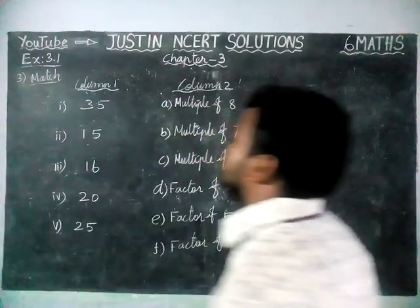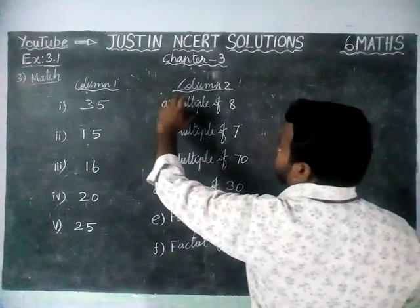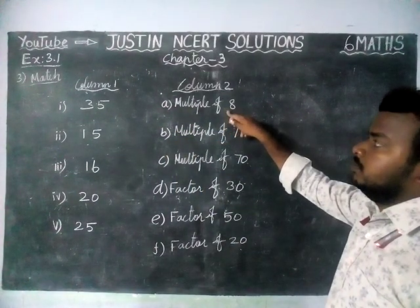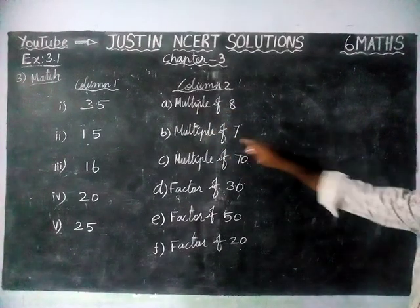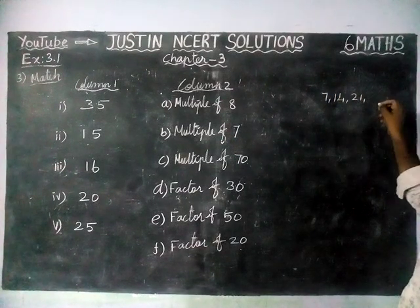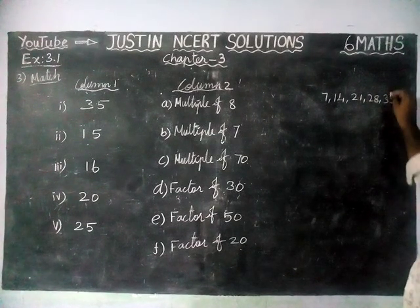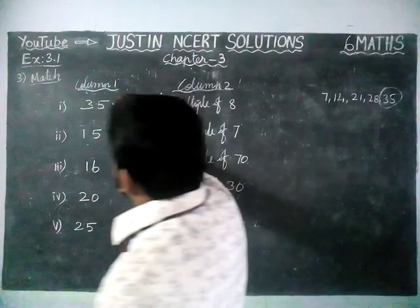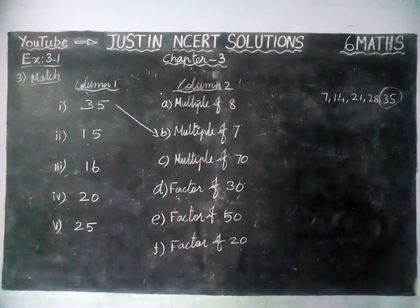Now we are going to check everything. For number 35, multiple of 8 is not possible. Next, multiple of 7 — let's check: 7, 14, 21, 28, 35. So 35 is coming. Multiple of 7 is 35. So the first question answer is option B — 35 is a multiple of 7.